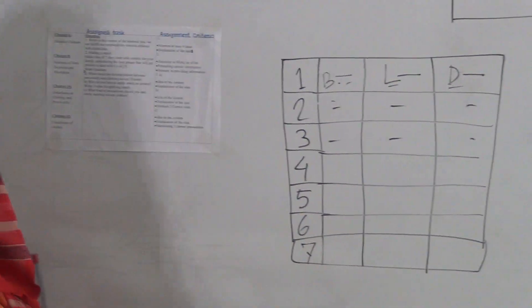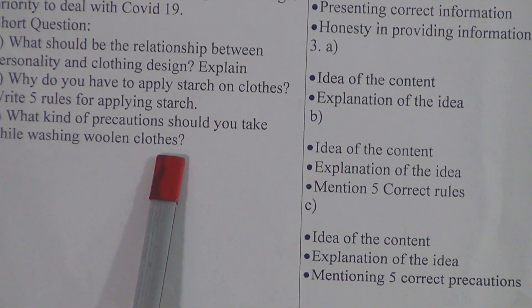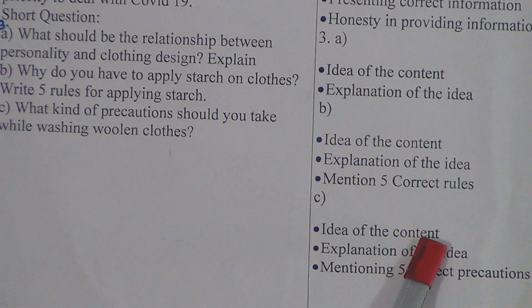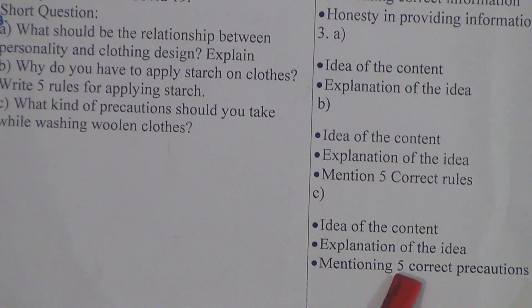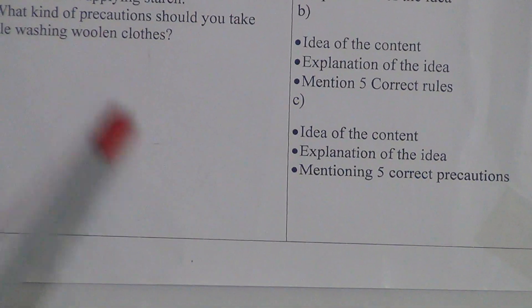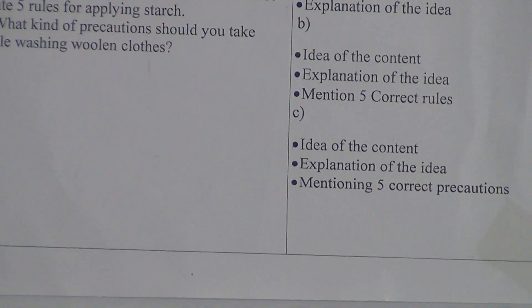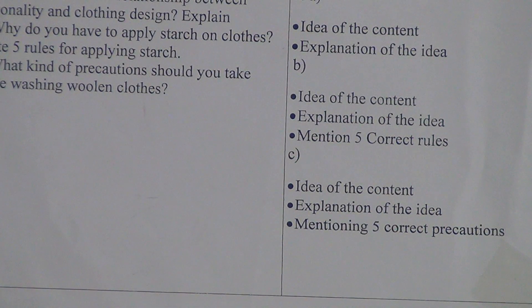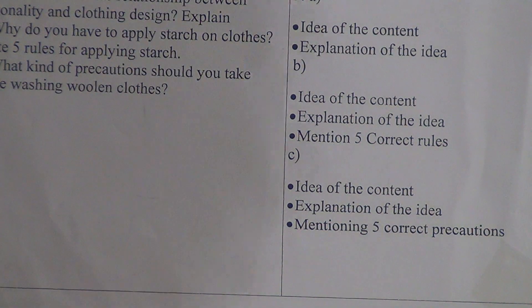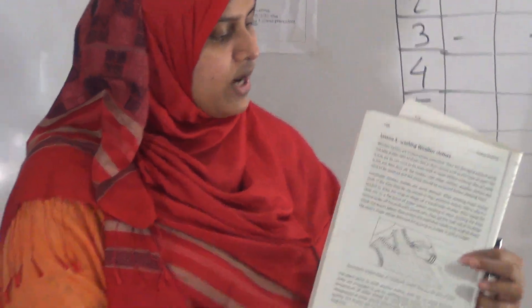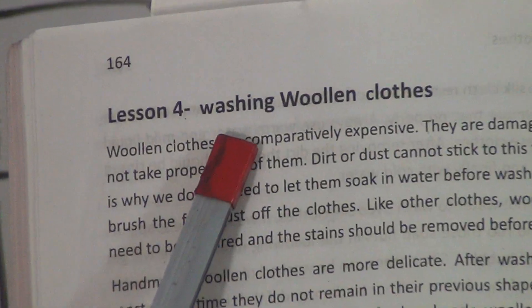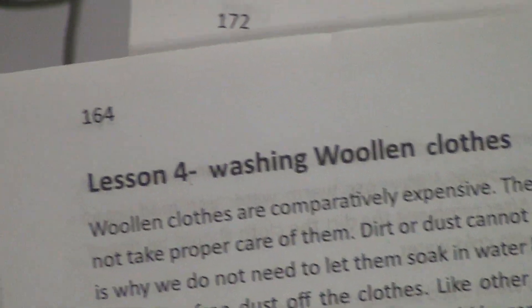Question C: what kind of precautions should you take while washing woolen clothes? The assignment criteria are idea of the content, explanation of the idea, and mentioning five correct precautions. While washing woolen clothes we have to be cautious. Again take your home science book and open page number 164, lesson 4: washing woolen clothes.